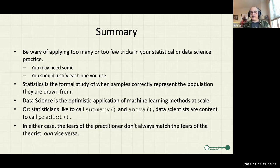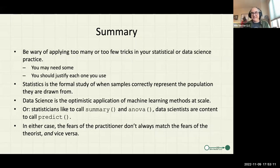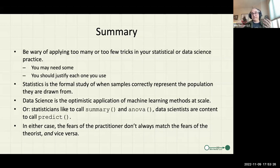Again, what is statistics and data science? Statistics is a formal study of when samples correctly represent the populations they're drawn from. Data science is the optimistic application of machine learning methodologies — this machine learning method was built by a PhD, therefore it should be great when I use it. Statisticians like to call summary and ANOVA — they can get a lot out of a model without ever calling predict. Data scientists have really no other trick than to call predict; if they can't solve their problem by calling predict, they're stuck. In either case, the fears of the practitioner are not always the fears of the theoretician, and it depends on context which one is the right one.